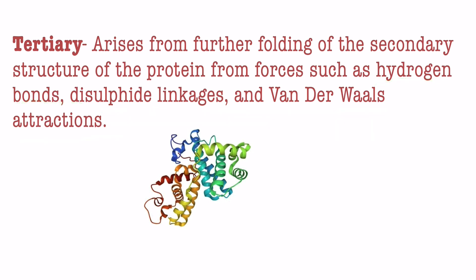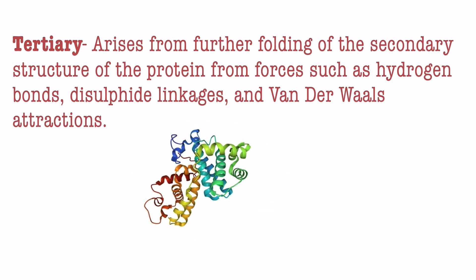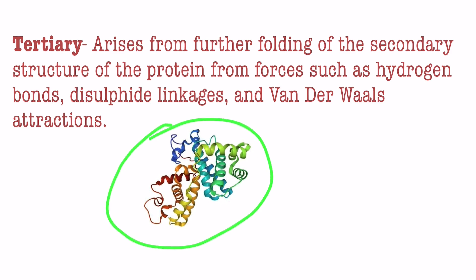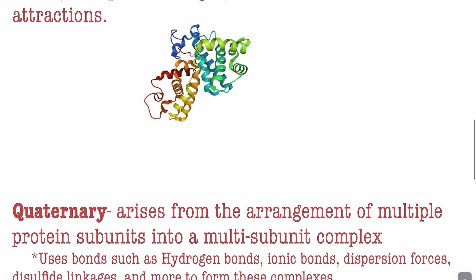In a protein you can see this line here — that's the primary structure — and here are the double helixes, and maybe there's a beta sheet in here somewhere. A protein will be a combination of all of those, and then what happens in the tertiary structure is that it folds in on itself and forms this big cluster right here.